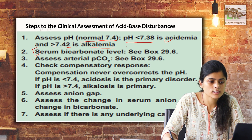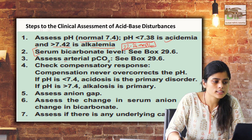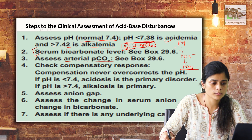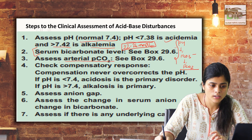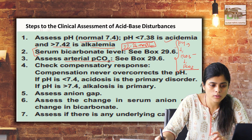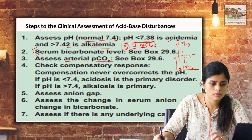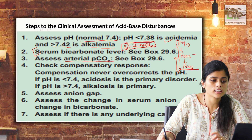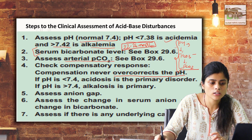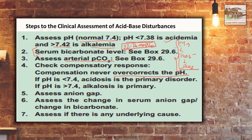Second, assess the serum bicarbonate level — normal is 22 to 26 mmol per liter; if less or more that can lead to a pathological condition. Third, assess arterial pCO2 level and see whether your compensatory mechanism is working and whether pH is normalized. If pH is normal we call it fully compensated; if pH is around normal with changes in bicarbonate or pCO2, it is not fully compensated. Remember, pH is never over-corrected by compensation.